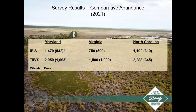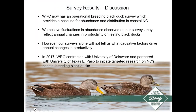WRC now has an operational breeding black duck survey providing a baseline for abundance and distribution in coastal North Carolina. Fluctuations in abundance observed likely reflect annual changes in productivity of nesting black ducks. However, these surveys alone won't tell us what causative factors drive these changes in productivity. To address this, in 2017 WRC contracted with the University of Delaware and partnered with the University of Texas El Paso to initiate targeted research on North Carolina's coastal breeding black ducks.